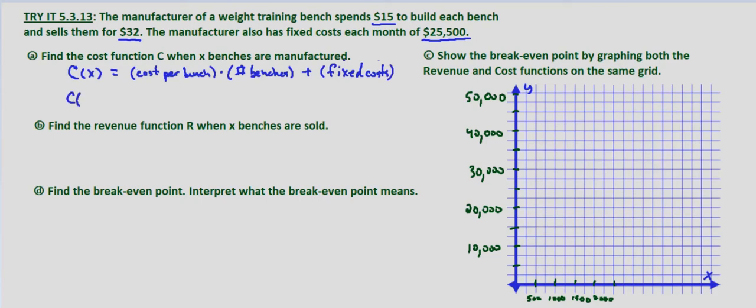Now we just need to plug in our given information. So C of X equals, we're told the cost per bench is $15, so $15 times the number of benches, that's defined in the problem as X, plus our fixed costs which is $25,500. So there's our cost function.